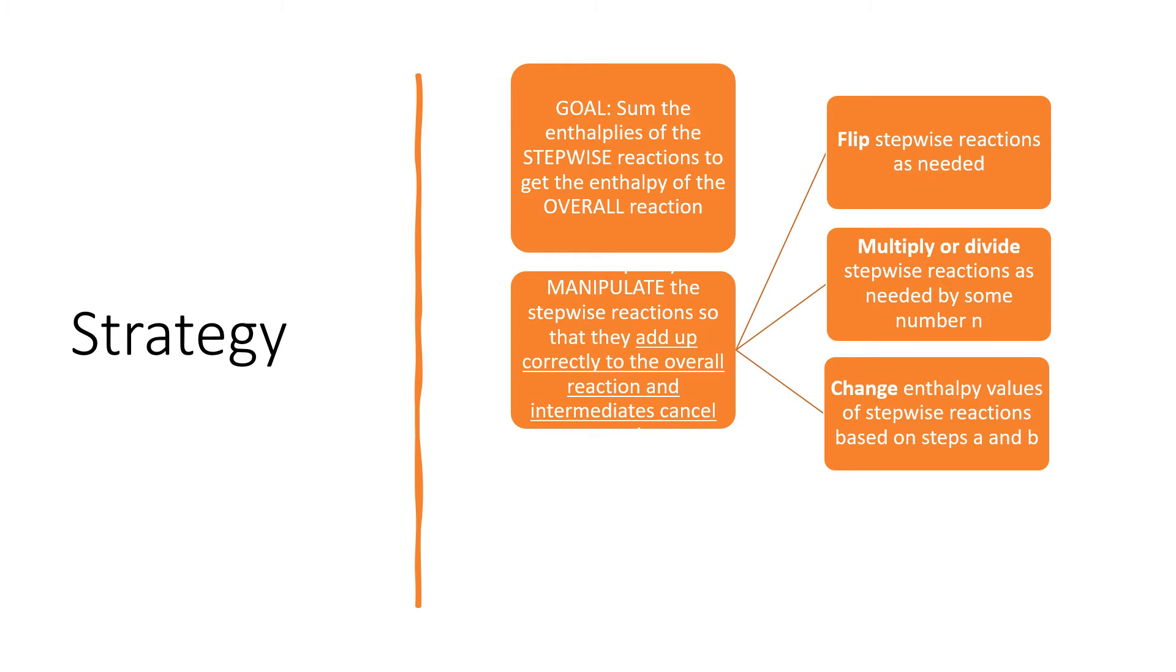Once we do that, once we have performed these manipulations of flipping, multiplying, dividing, we have to remember that then we have to change the enthalpy values of those steps depending on what we have done to them. In other words, if we flip a reaction, one of our steps, we have to change the sign. If we multiply an individual reaction by some number, we have to multiply its enthalpy by that number, and so on.